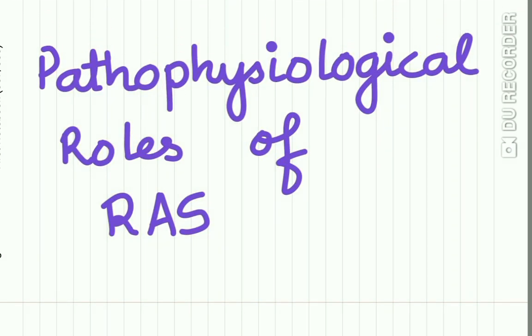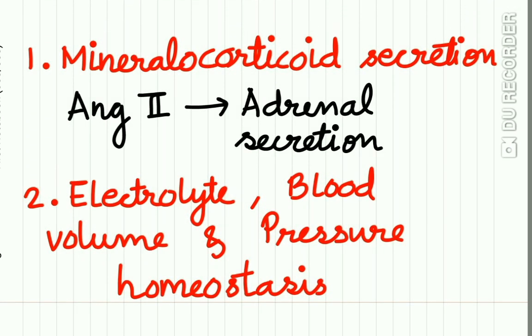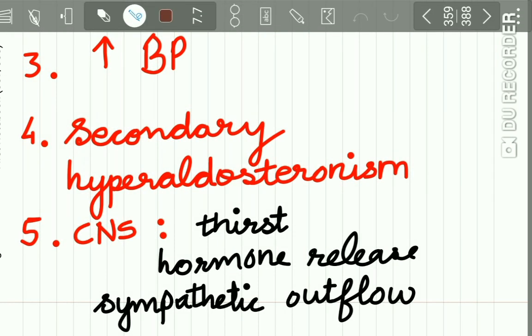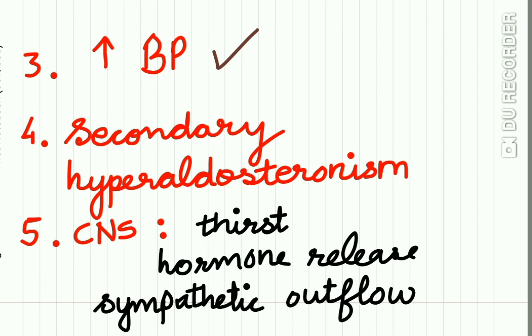What are the pathophysiological roles of the renin-angiotensin system? It controls mineralocorticoid secretion. Angiotensin 2 is a stimulus for aldosterone secretion from the adrenal cortex. The renin-angiotensin system helps in increasing blood pressure and causes secondary hyperaldosteronism. The CNS effects include promoting thirst, hormone release, and sympathetic outflow.